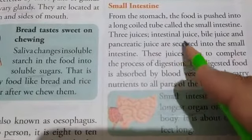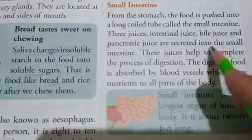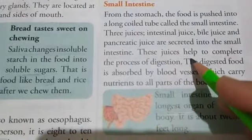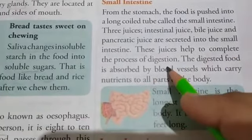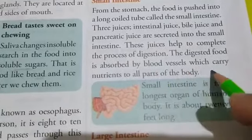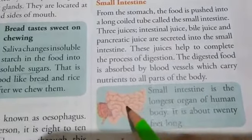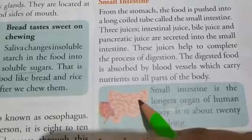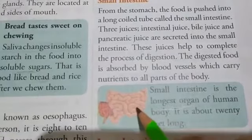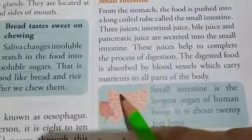Three juices — the intestinal juice, bile juice, and pancreatic juice — are secreted into the small intestine. These juices help to complete the process of digestion. The digested food is absorbed by the blood vessels, which carry nutrients to all parts of the body. Complete digestion takes place in the small intestine and the nutrients get absorbed by the blood vessels.